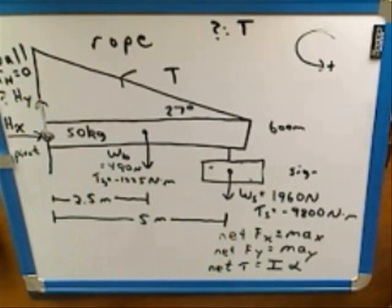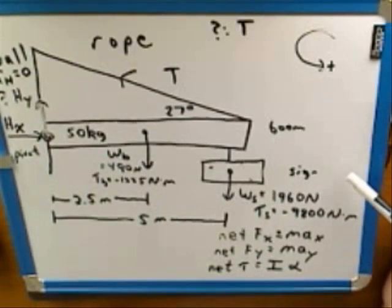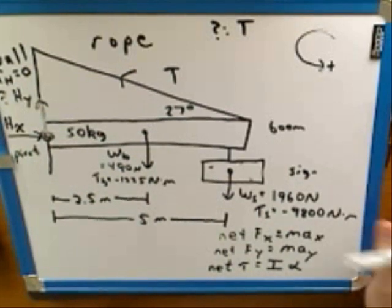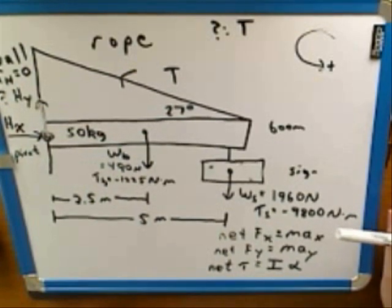So I'll repeat that one more time. If the object is rotating, then you don't have any choice about the pivot point. The pivot point has to be the point that you're rotating around. But if the object is not rotating, if you're doing a statics problem, then you can choose whatever point you like as the pivot point.